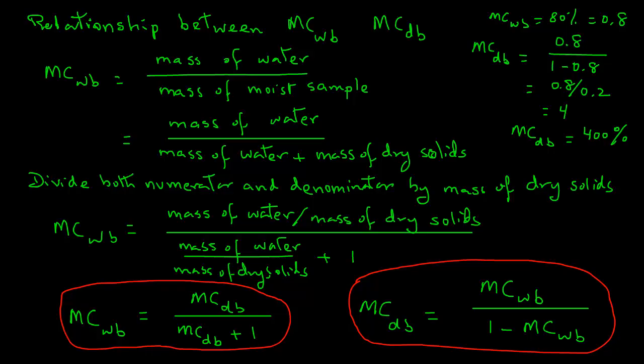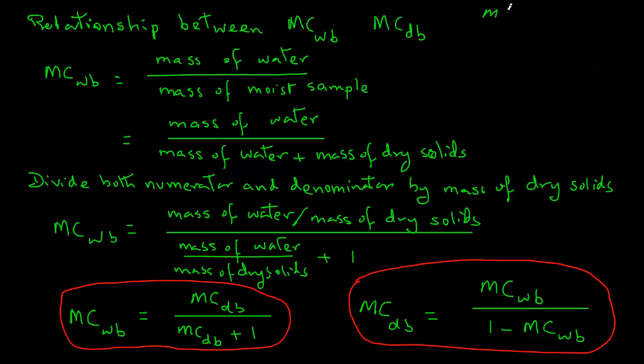What this 400% means is that the amount of water present is 4 times the amount of dry solids present in that sample. Let's look at another conversion. Let's say the moisture content dry basis is 0.6 or 60%, and we want to find out moisture content wet basis.